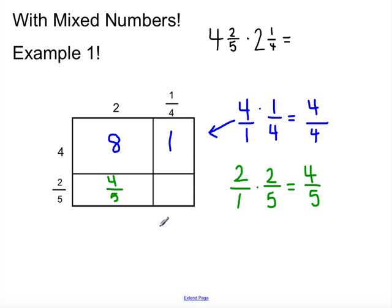And then, our last one, 1 fourth times 2 fifths. Again, multiplying our numerators. 1 times 2 is 2. Multiplying the denominators. 4 times 5 is 20. I get 2 over 20. And I can simplify that. I know 2 goes into both. So, I have 1 tenth.